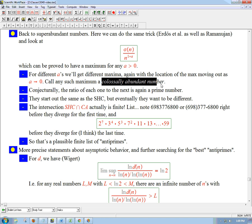A colossally abundant number is one of the maxima. You pick an a, you look at the whole graph, you look at the one place where it's going to be best, where σ(n) best compares to n^(1+a) for that particular a, and that picks out one of these guys. Then you try another a, and another a, and you're going to get different numbers.